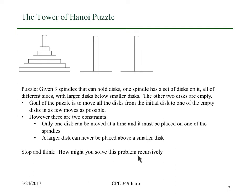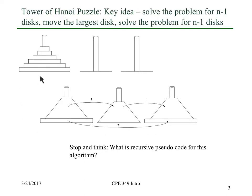You might pause the screencast now, think about how you might solve this puzzle recursively, then go on to the next slide. So here's our picture again: we've got the disks on the source spindle, we've got this other spindle, and we're going to try to move them to the target spindle. The idea that makes this work is to pretend that you've got a genie or a magic black box that can solve the problem for smaller problems. We'll use the genie to move n minus one of the n disks into the middle spindle, then move the largest disk over to our target spindle, and then call our magic black box to move the n minus one disks over to the final target.